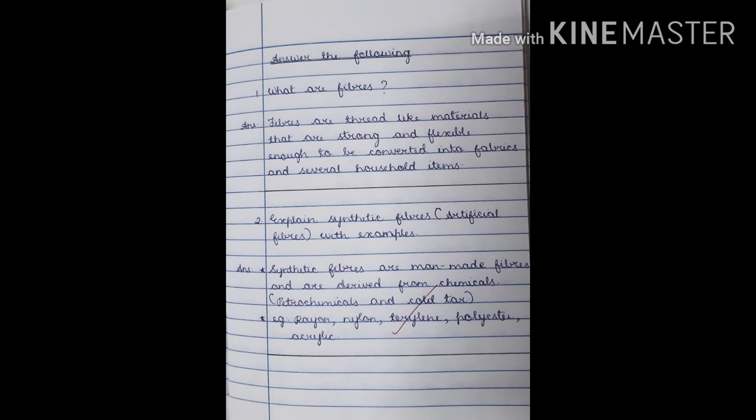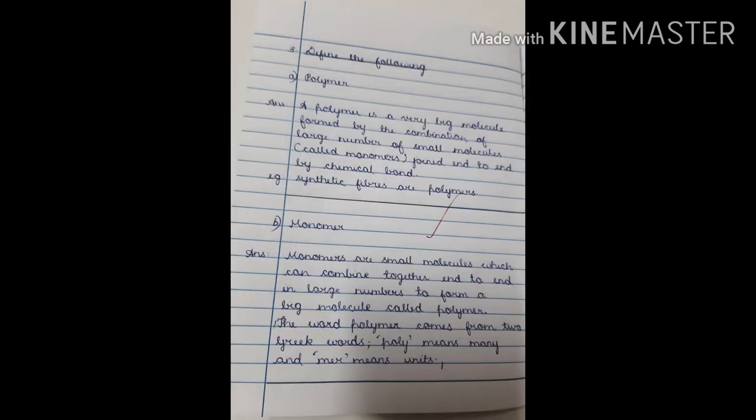Second question: explain synthetic fibers or artificial fibers with examples. Synthetic fibers are man-made fibers and are derived from chemicals, petrochemicals, and coal tar. Examples include rayon, nylon, terylene, polyester, and acrylic.